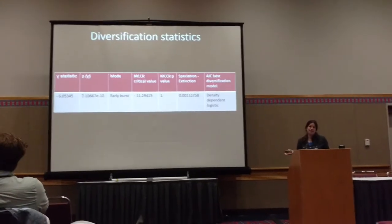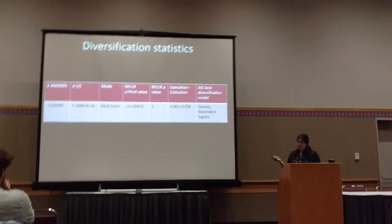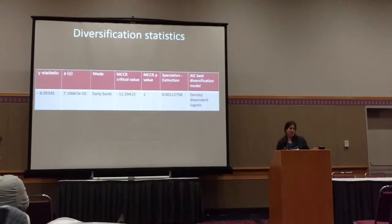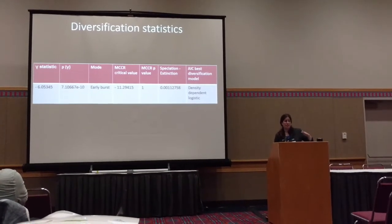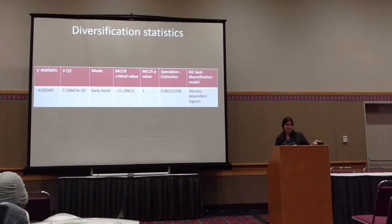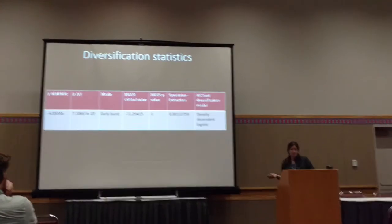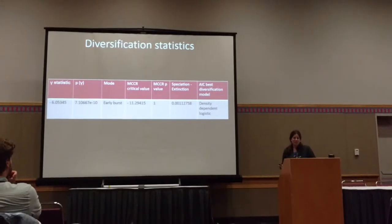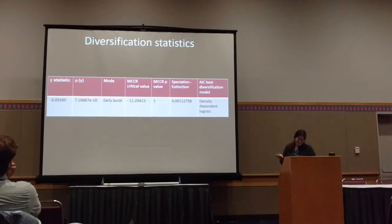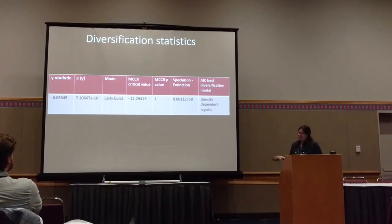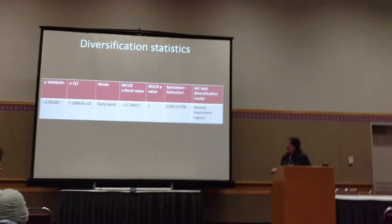The problem is that the gamma statistic doesn't account for taxon sampling. The MCCR test simulates based on the number of taxa you have sampled versus the estimated number in the clade — and we don't even have a great estimate of that for gamma proteobacteria. My student basically has a rap song called 'too many gammas' because there are so many BLAST hits for them.